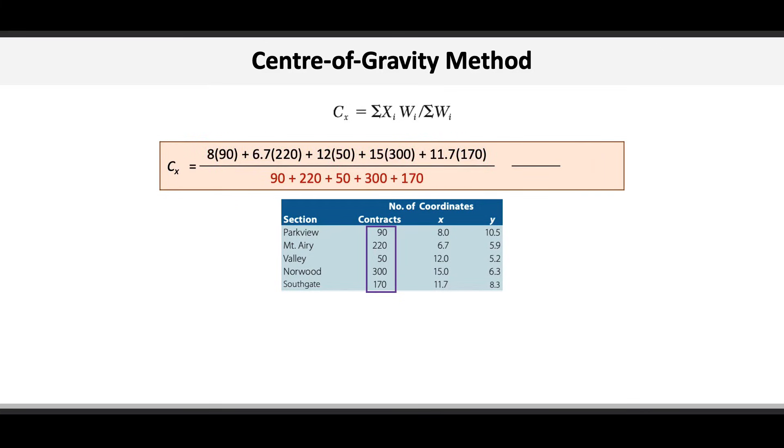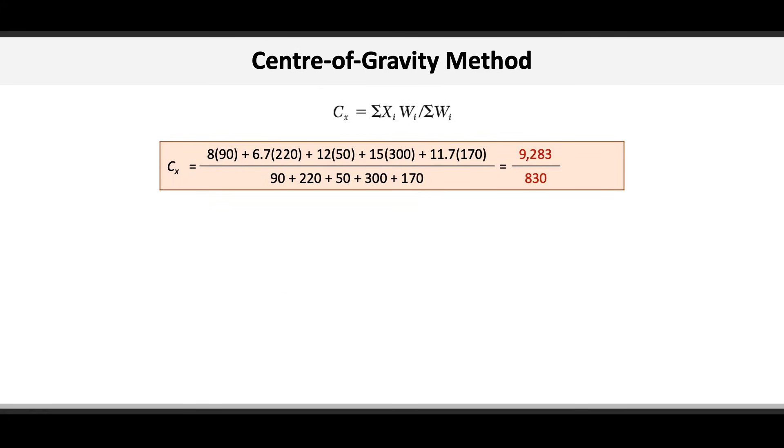Then for the denominator, we just add all of the weights, so 90, plus 220, plus 50, plus 300, plus 170. Then we follow the math through, and we get 9,283 divided by 830, and the final answer for the x coordinate for the center of gravity is 11.18.